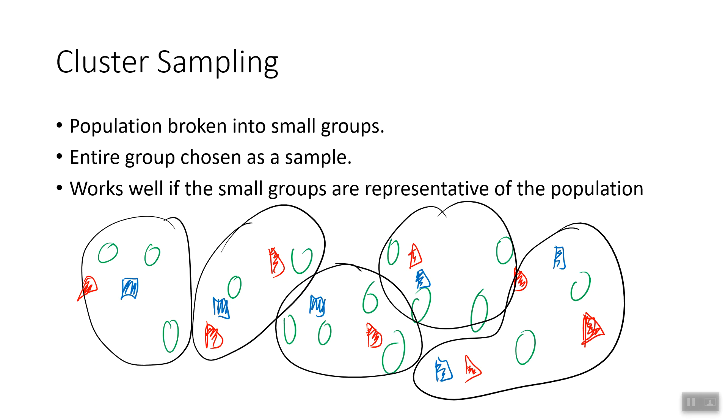And so here you've got your population of circles and triangles and squares, and they're just sort of scattered about, and you randomly somehow or another group them together, and then you randomly choose one of those to be your sample. So any one of these five options might end up as your sample.